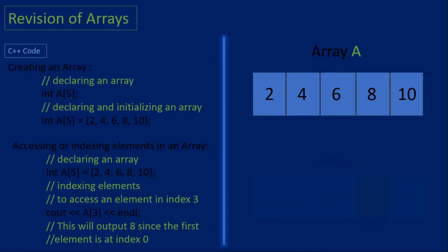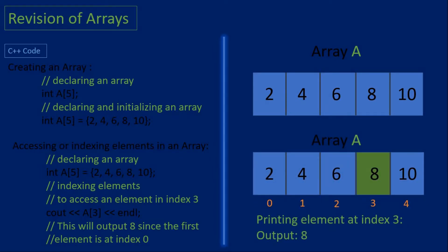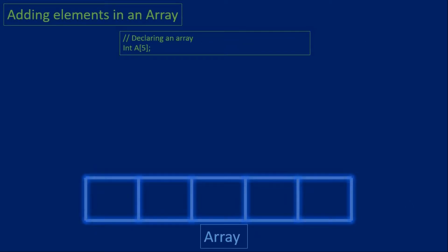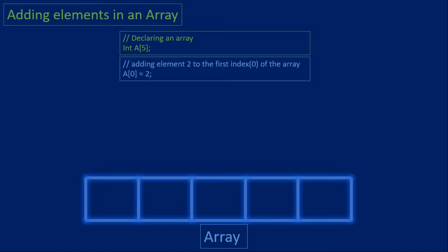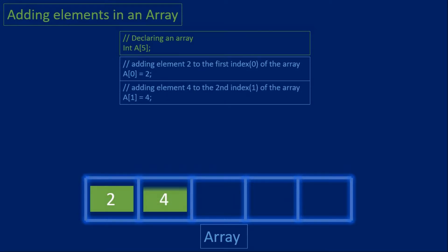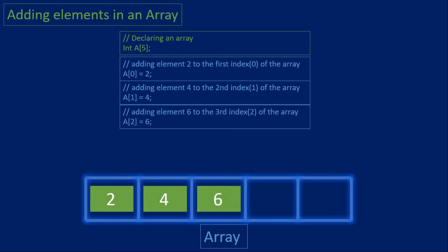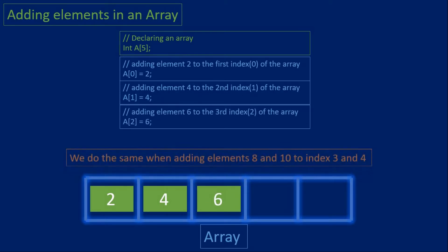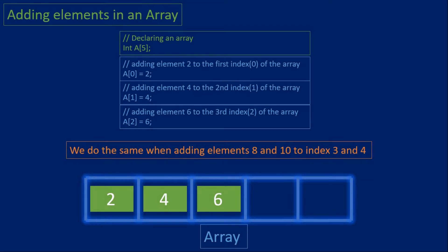There's also another thing I'd like to cover in this revision of arrays. Say we have an array that can store five elements and we haven't initialized it. One way to add elements is to write the array name with the index we want and set it equal to the element we want to add. So in array 'a' at index zero we add two, at index one we add four, at index two we add six, at index three we add eight, and at index four we add ten.